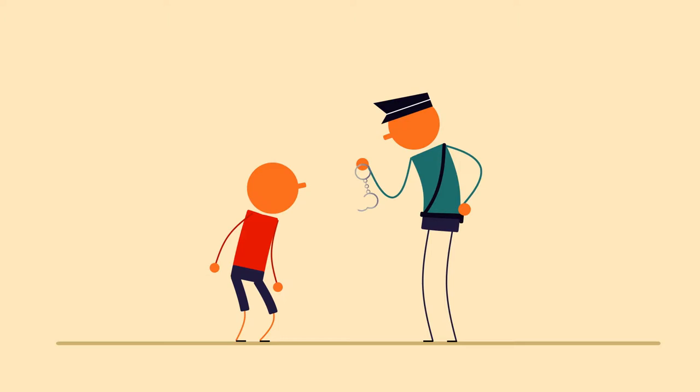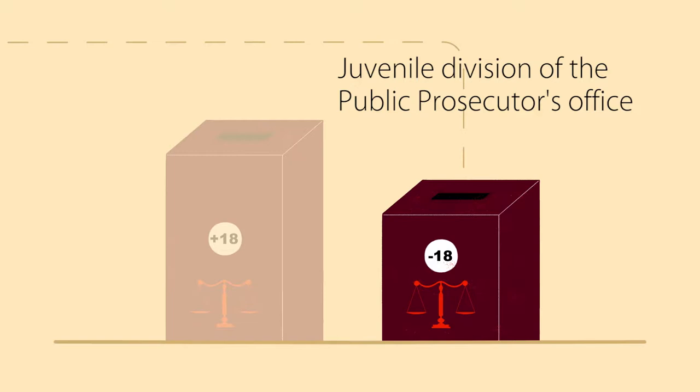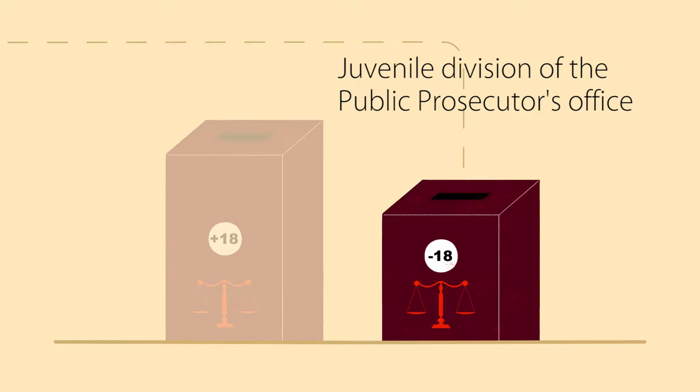Sometimes the perpetrators, minors, are caught in the act. Sometimes they are arrested later. After questioning, the perpetrator may spend the night in a cell. The police draw up an official report which they send to the juvenile division of the Public Prosecutor's Office when the perpetrator is under 18 years of age.